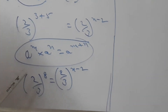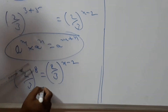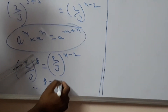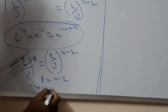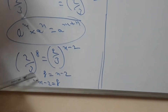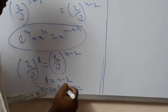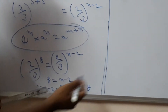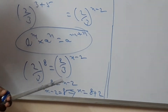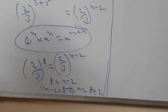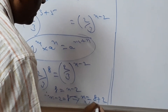What will you observe? The bases are equal. Now, 8 is equal to n minus 2. Write it as n minus 2 is equal to 8. Now, n is equal to 8 plus 2, which gives n is equal to 10.